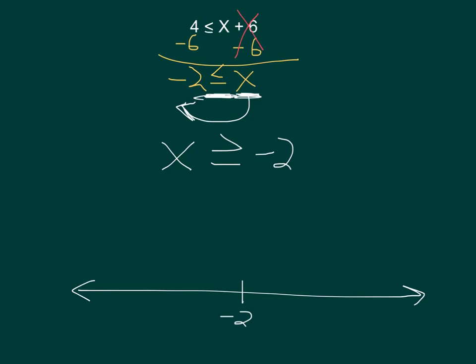So now if I take my number line with negative 2 in the middle, and I add a few more numbers for reference, I see that I have a greater than or equal to sign. So I'm going to have a solid dot at negative 2. The way this greater than is pointing looks like this arrow over here. So I'm going to fill in this line all the way over to my arrow.